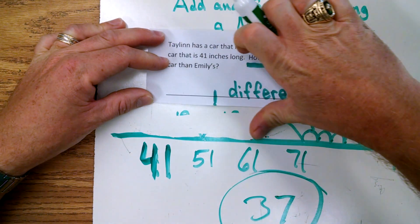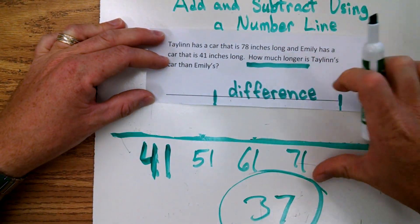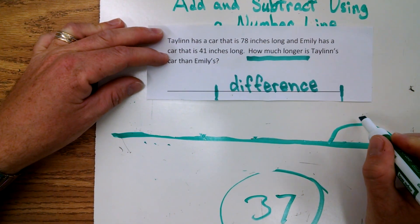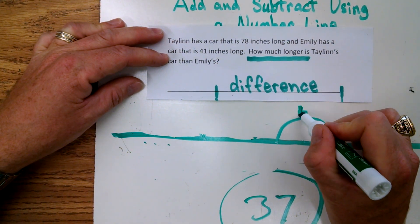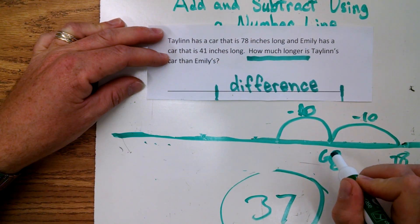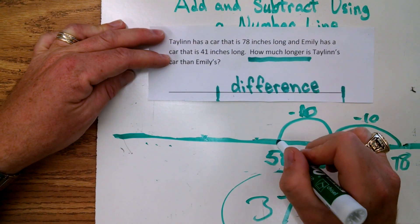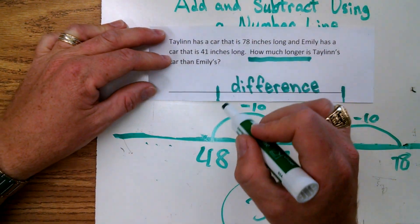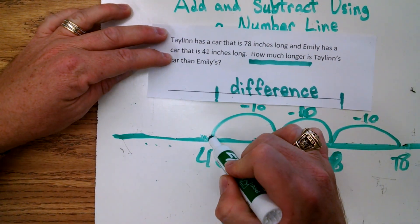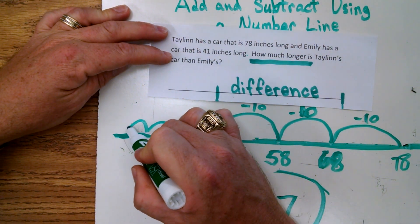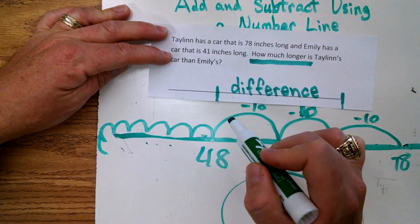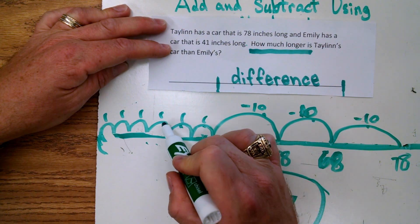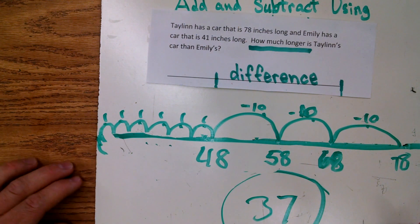We could have done the same thing going backwards. I think it's a little easier for most of us to count up, but we could have gone 78, 68, 58, 48, and then count down the remaining ones: 47, 46, 45, 44, 43, 42, 41. Counting it all up: 10, 20, 30, and then 31, 32, 33, 34, 35, 36, 37. Either way, we get the same answer — it's just a little easier to count up.